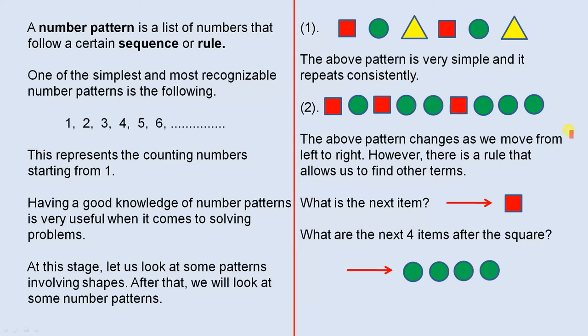Number 2, the above pattern changes as we move from left to right. However, there is a rule that allows us to find other terms. So what is the next item? We have a square, one circle, square, two circles, square, three circles. So the next one must be a square if you follow that pattern.